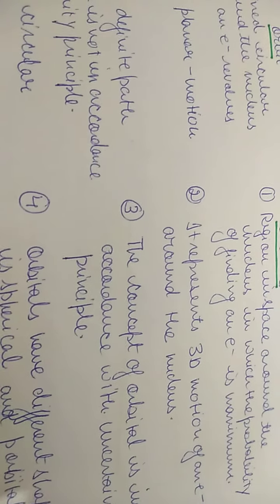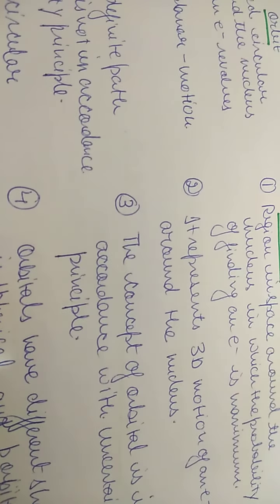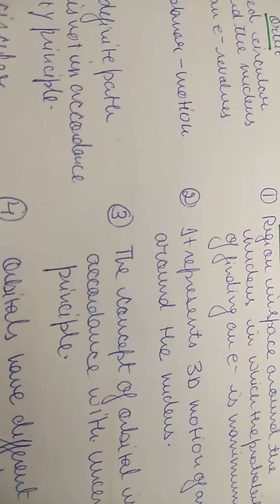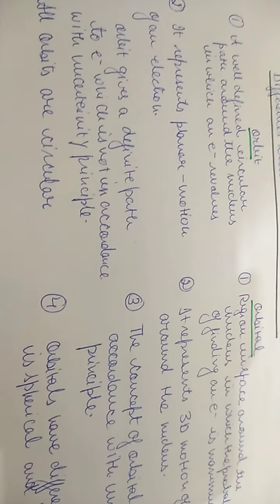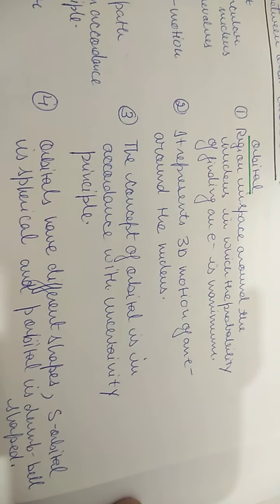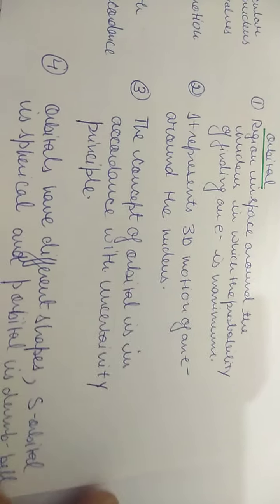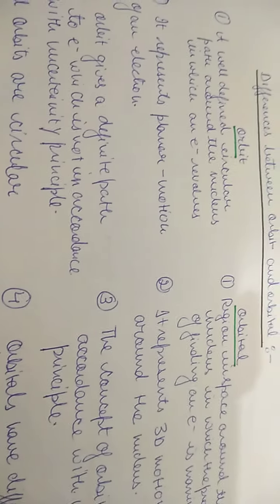The orbital concept never shows a definite path; it only gives you the probability of where an electron can be. Another difference: all orbits are circular, whereas orbitals have different shapes — S is spherical, P orbital is dumbbell-shaped, and D orbital is double dumbbell-shaped.